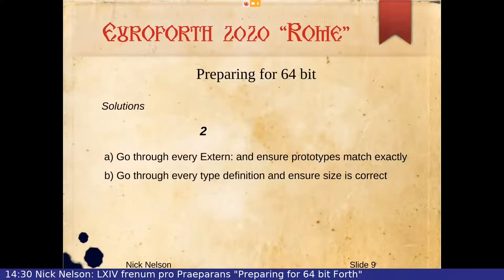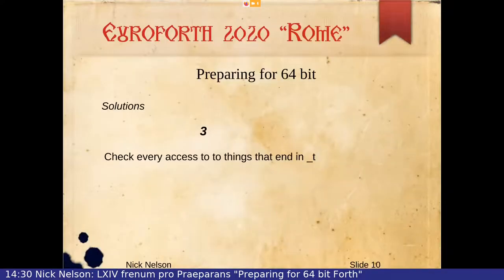The next thing, of course, was we had to go through — and are still going through — every single extern and checking it against the prototypes to see that they match exactly, going through all the type definitions. There are simply hundreds of these to ensure they are the correct size. Finally, we had to go through all the things with _t at the end and make sure they are now 64-bit instead of 32-bit.